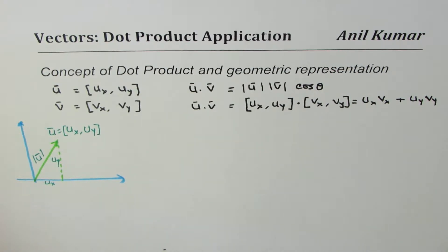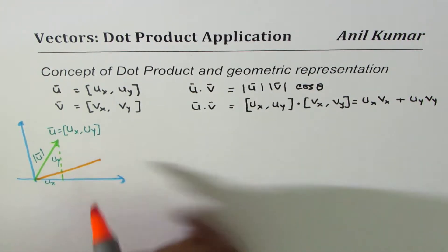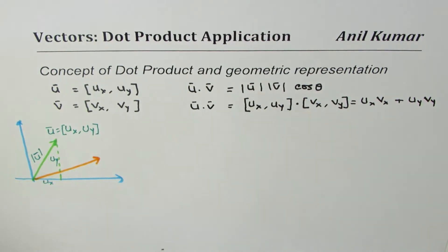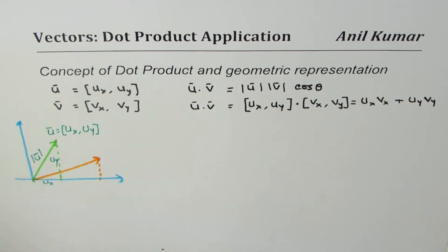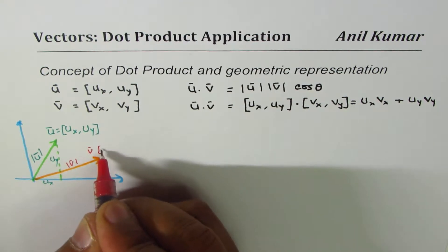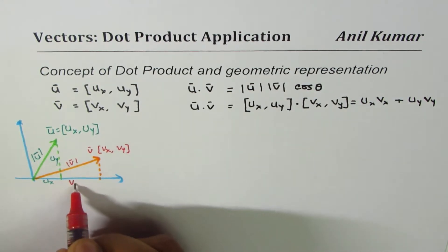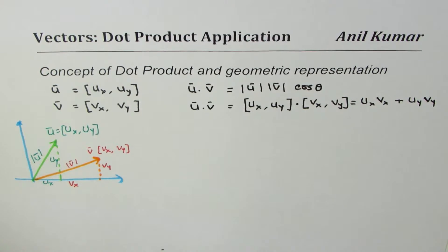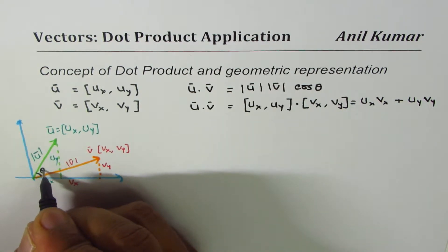Now let me draw vector v. The components of v: dropping a perpendicular, this is the magnitude of vector v, and vector v in component form has vx and vy. So this is vx and this is vy. These are the two vectors we're talking about, and the angle theta is the angle between them.